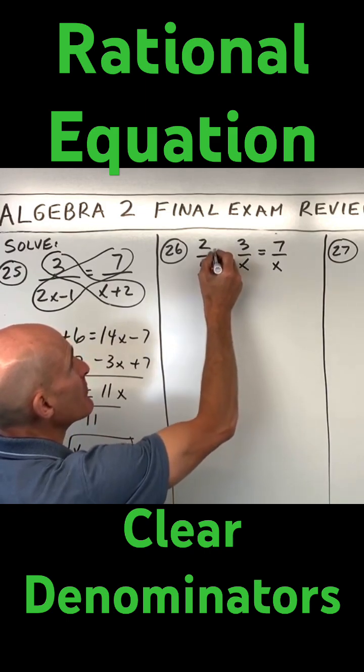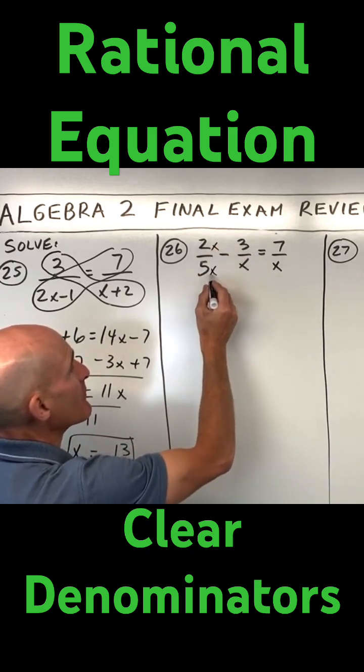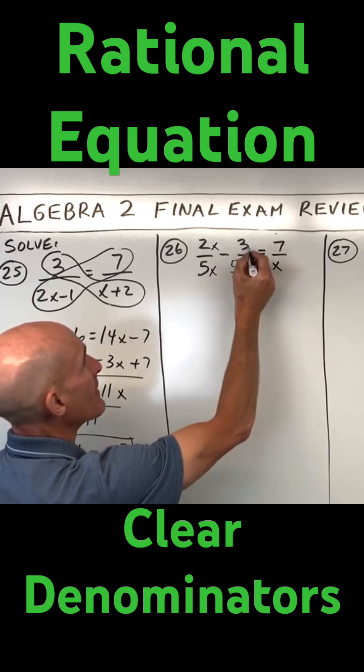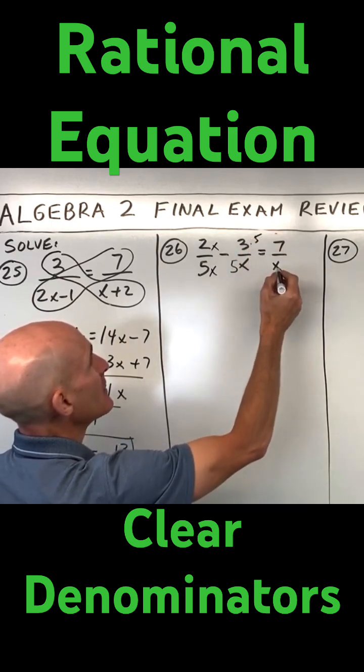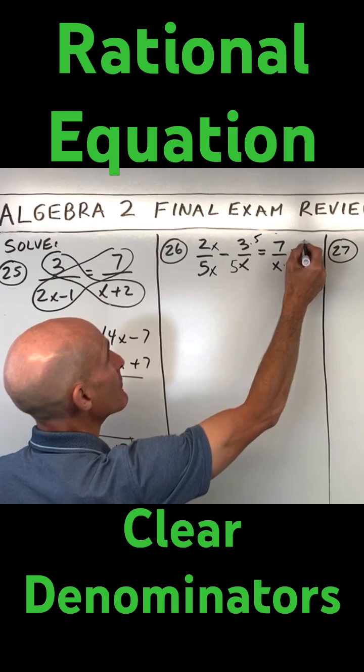So I'm going to multiply top and bottom here by x, so I have a denominator of 5x. This one I'm going to multiply top and bottom by 5, and this one, same thing, I'm going to multiply the top and bottom by 5.